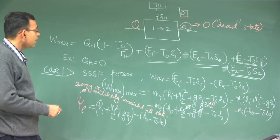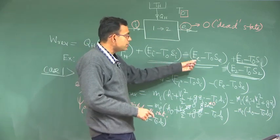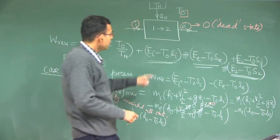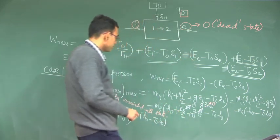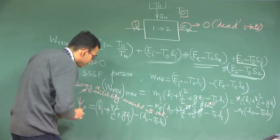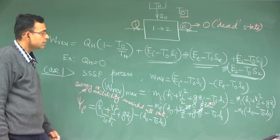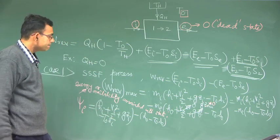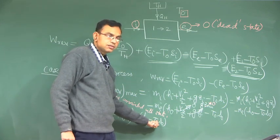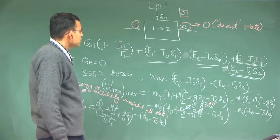Psi_i is H_i + V_i²/2 + G·Z_i − H_0 − T_0·S_0. This is specific exergy or specific availability — essentially, per unit mass, what is the work potential associated with state i. I forgot to write minus T_0·S_i, which is very important. So psi_i minus psi_e — when you write this, the term H_0 minus T_0·S_0 gets cancelled.